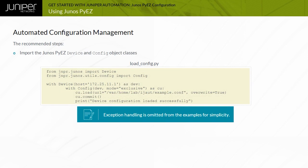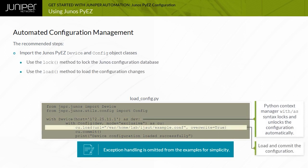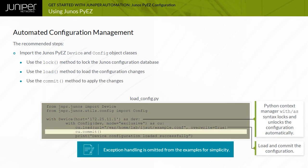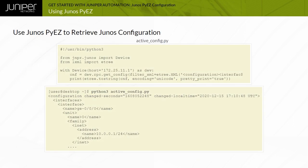The recommended order of operation for managing Junos configuration changes using automation tools is to lock the configuration database. In networks that use automation extensively, it is recommended that you perform configuration management using a private configuration database, because locking the shared configuration database can affect other automation tools.